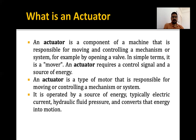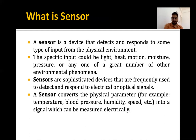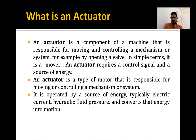Then we have the actuator. For giving motion to an object or thing, we need the actuator. An actuator is a component of a machine that is responsible for moving and controlling a mechanism or system — for example, by opening a valve. In simple terms, it is a mover. An actuator requires a control signal and a source of energy. Similarly, sensors also need energy to work.